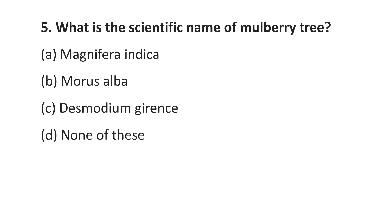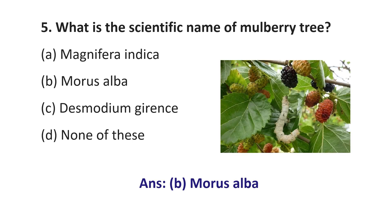Question number 5. What is the scientific name of the mulberry tree? Option A, Magnifera indica; Option B, Morris alba; Option C, Desmodium gerans; Option D, None of these. The answer is Option B, Morris alba.